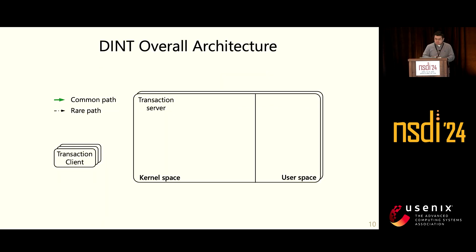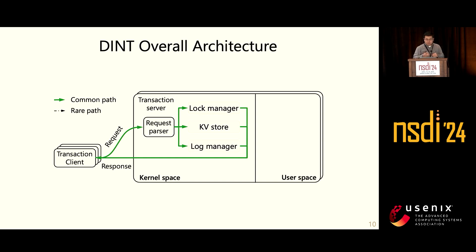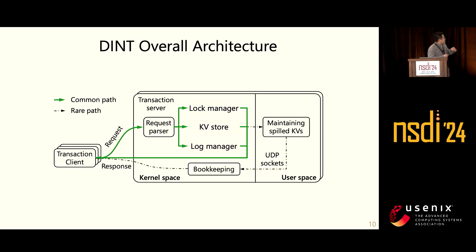The resulting system is called DINT. Before diving into the design, let me show how DINT works at a high level — how it separates rare and common cases. The transaction client sends a request to the transaction servers, which goes through a request parser. The parser passes requests to one of three key components. In common cases, requests are directly forwarded back with modified data as responses. In rare cases, key-value requests that cannot be served by the kernel eBPF components are forwarded to user space, which receives them and sends back responses through UDP sockets. These rare-case responses also go through a kernel-space bookkeeping eBPF program to maintain internal states, such as releasing internal logs.